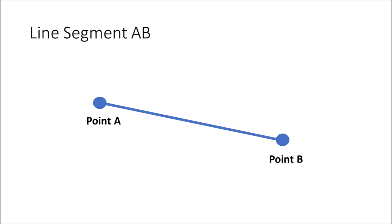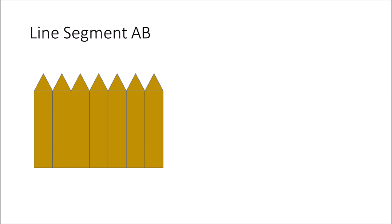The line segment goes through two points but ends at those points. Think of a line segment as a fence. It goes along a line but has two endpoints.